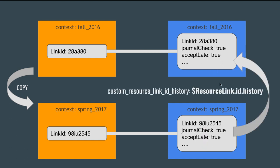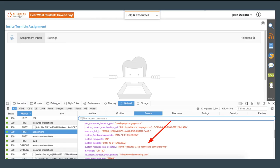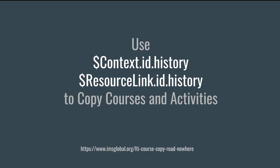To work around that, there is a new variable substitution parameter called resource_link_id_history. It gives you the history of all the resource links. So you would know that resource link ID 98IU2545 is actually a copy of 28A380, allowing you to copy it on your side too. And 98IU2545 is a copy of 28A380, which is itself a copy of 8901. If by any chance you don't have 28A380 because the user never clicked on that link, you can look at the one before. We pass this to Turnitin so they can copy the proper settings from one course to another on a per-link basis. The same thing exists for context ID history.